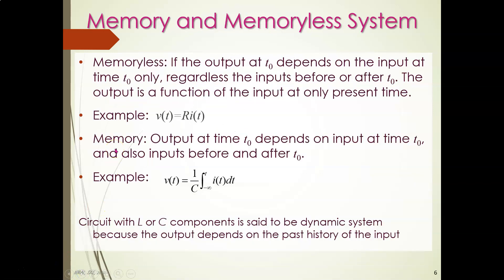Another classification is memory and memoryless systems — this is the easiest to differentiate. A system is said to be memoryless if the output at time t-naught depends only on the input at that same time t-naught, regardless of inputs before or after t-naught. The output is a function of the present input only; it does not depend on past or future values.